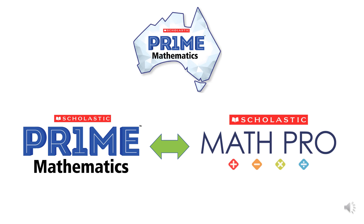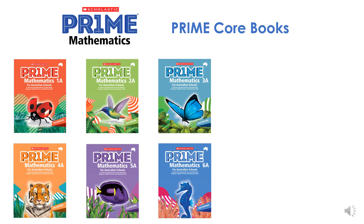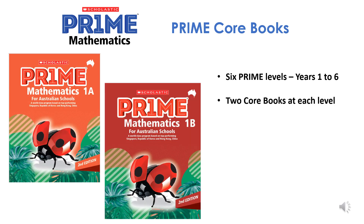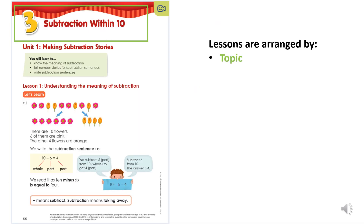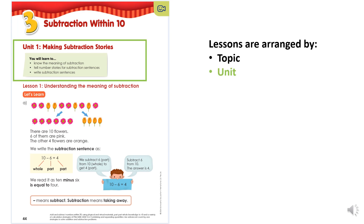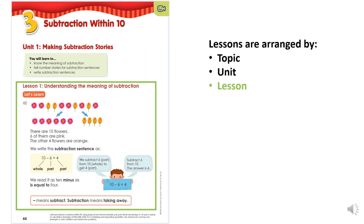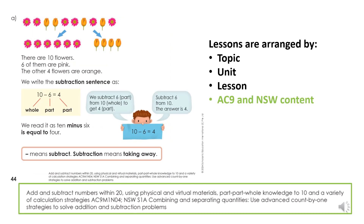Prime is a portfolio of print and digital resources. The printed core books have lessons that are aligned to the core content of the curricula. For Australia, there are currently six Prime levels for years one to six, with two books at each level. To provide the opportunity for deep student understandings, lessons are grouped together by topic, unit and lesson. The specific lesson content from the Australian Curriculum and New South Wales syllabus is identified at the bottom of each page.